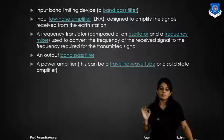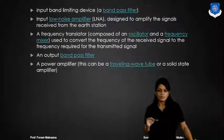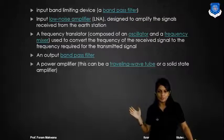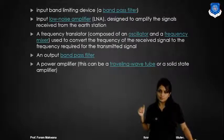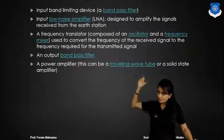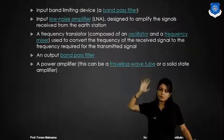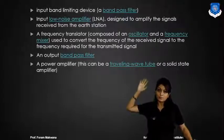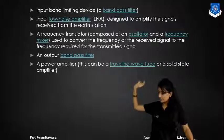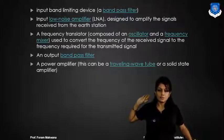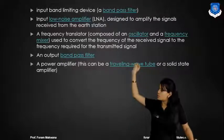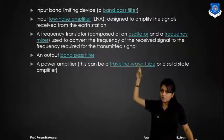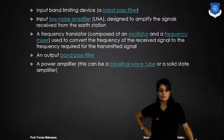First, we require the input when it is fed at the transmitting endpoint. The low noise amplifier is designed to amplify the signals received from the ground station. The frequency translator, which is composed of an oscillator and the frequency mixer, is used to convert the frequency of the received signal to the frequency required for the transmitted signal.